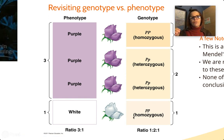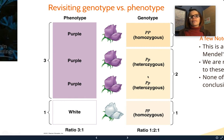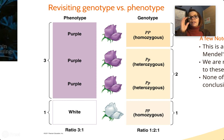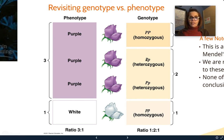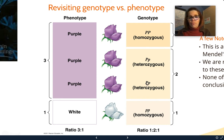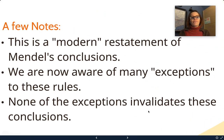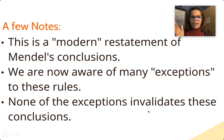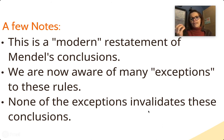Two important words: phenotype is what an organism physically looks like — purple flowers versus white flowers. Genotype is the letters they've inherited. With a dominant trait, the genotype can be homozygous dominant (two big P's) or heterozygous (one big P, one little p) — both still look the same shade of purple because the dominant trait hides the recessive. The only time we get white is with two recessive alleles. What Mendel studied was fairly simple, and there are many exceptions to his rules, but they're a great foundation for learning the basics of genetics.